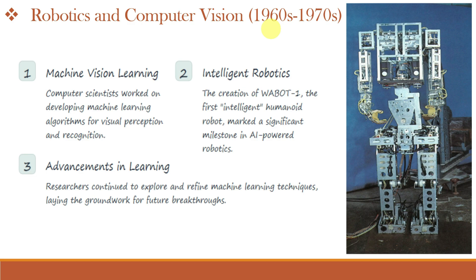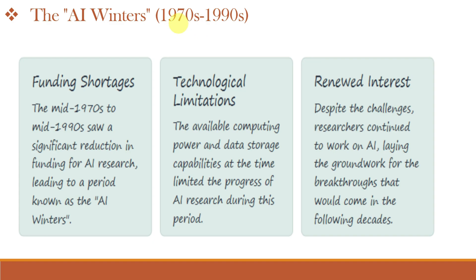The development in Artificial Intelligence and Machine Learning in the 1960s and 70s can be called the era of Robotics and Computer Vision. In the late 1960s, computer scientists worked on machine vision learning and developing machine learning in robots. Wabot-1, the first intelligent humanoid robot, was built in Japan in 1972, which was a significant milestone in AI-powered robotics. In further years, researchers continued to explore and refine machine learning techniques, laying the groundwork for future breakthroughs.